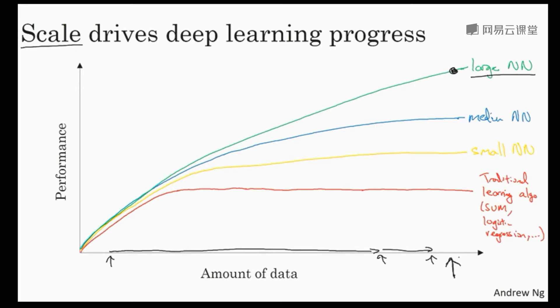In fact, today, one of the most reliable ways to get better performance in a neural network is often to either train a bigger network or throw more data at it. And that only works up to a point because eventually you run out of data or eventually the neural network is so big that it takes too long to train. But just improving scale has actually taken us a long way in the world of deep learning.